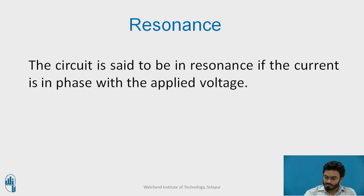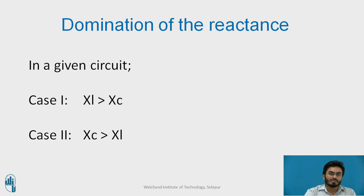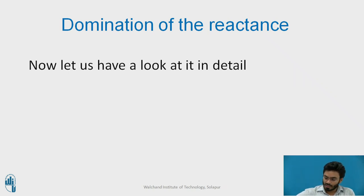As we have seen in series resonance, resonance happens whenever the inductive reactance equals the capacitive reactance. Similarly, below the resonant frequency in a series resonant circuit the circuit is more capacitive, but in the parallel case the circuit becomes more inductive. So the first case discusses the condition of impedance in a parallel resonant circuit where inductive reactance is greater than capacitive reactance — exactly the reciprocal of what we have in a series resonant circuit. Let's look at how impedance behaves and what the resonant frequency will be.